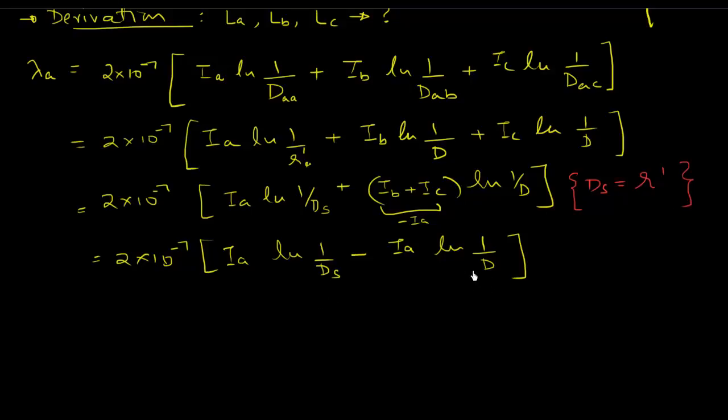Right. So we got to here. Now the other identity we're going to use - I'm going to write that here - we know that ln of a minus ln of b is equal to ln of a over b, which implies ln of 1 over a minus ln of 1 over b is equal to ln of b over a. And we've seen this before in an earlier derivation as well, but I just wanted to mention that again if someone hasn't seen that earlier video or you've forgotten that. So using this identity, we can say ln of 1 over a minus ln - Ia comes out common - so 2 into 10 to the power minus 7, Ia, and then we can say ln of 1 over a minus ln of 1 over b can be written as ln of b over a, so that is d over Ds.